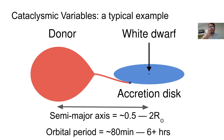So what is a cataclysmic variable star? In a typical example, you've got a white dwarf star and a secondary star, which is typically a low-mass main sequence star. This donor star is overfilling its Roche lobe, so it's slowly losing material to the white dwarf via an accretion stream. Because of angular momentum conservation, this accretion stream won't impact the white dwarf directly, but will instead form an accretion disk, shown here on the right.